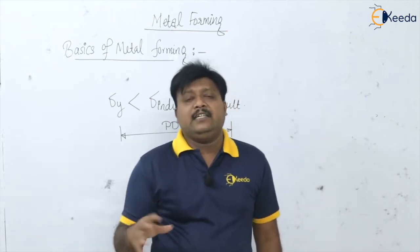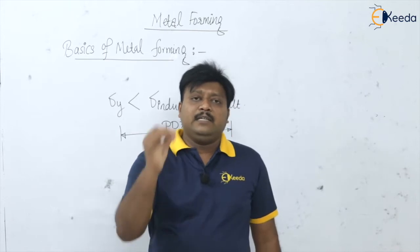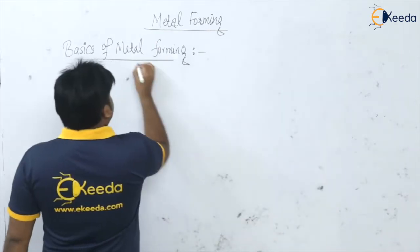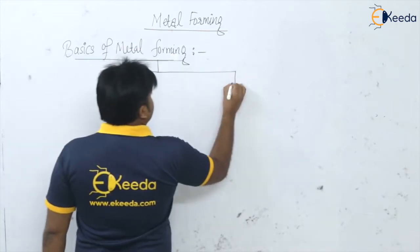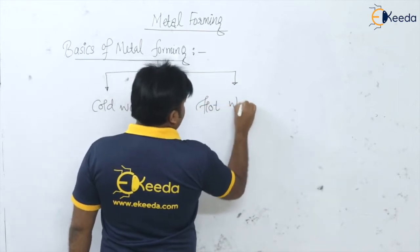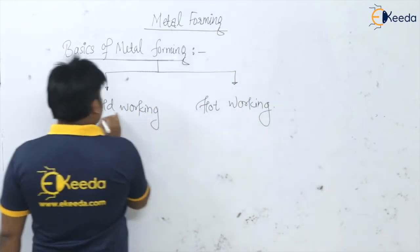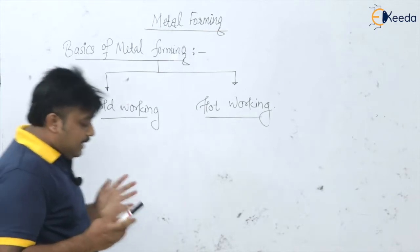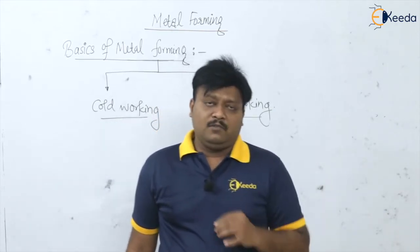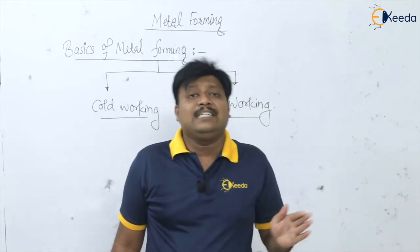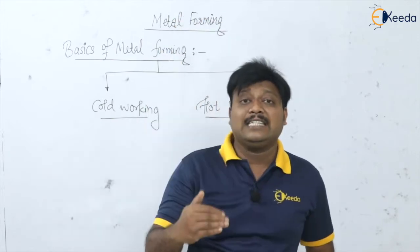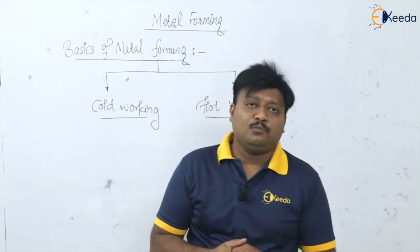Metal forming can be classified into two categories: one is cold working and the other is hot working. If the material is deformed or worked below its recrystallization temperature, it is known as cold working. When the material is deformed above its recrystallization temperature, it is known as hot working.